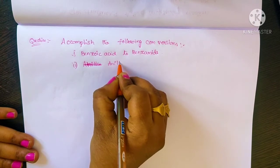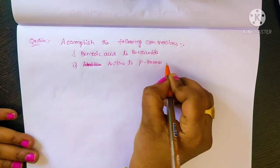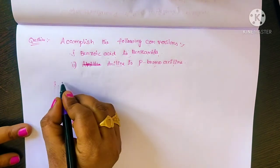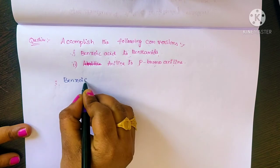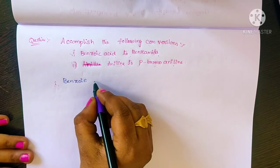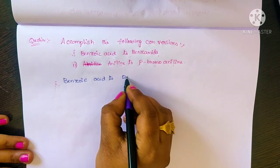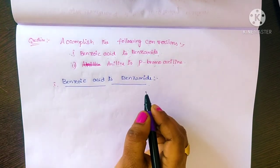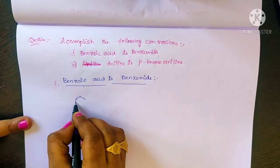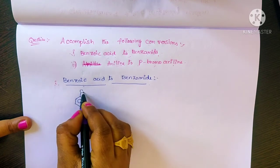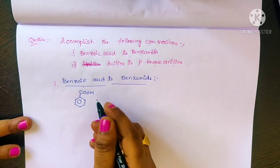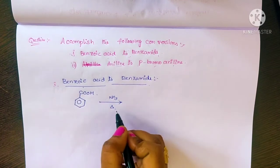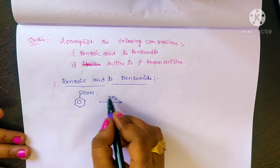Now we start the first one: benzoic acid to benzamide. The structure of benzoic acid is a benzene ring containing a COOH group. We call the name benzoic acid.